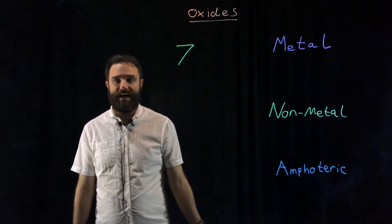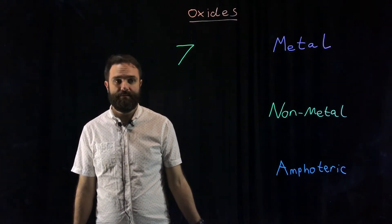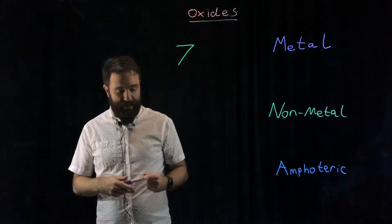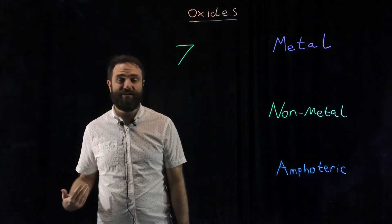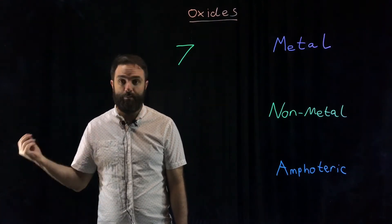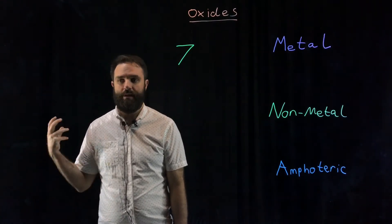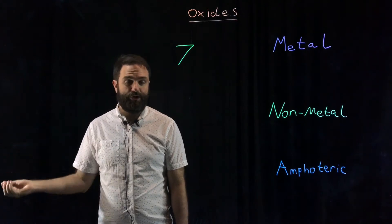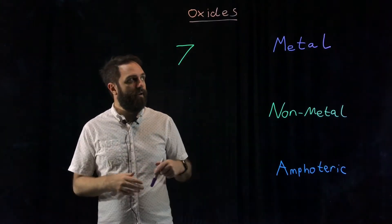Our next classification is metal oxides. If you take a metal like magnesium and you burn it in air, sodium, iron, you react it with oxygen, you make an oxide.